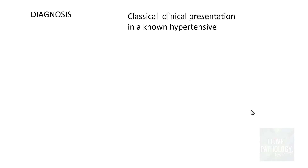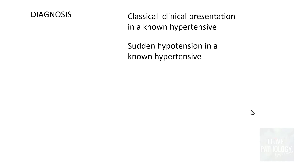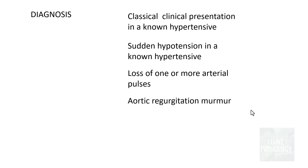How do you diagnose aortic dissection? In a patient with long-standing hypertension, the classical clinical presentation itself is diagnostic. Sudden hypotension in a known hypertensive, a difference in blood pressure between different limbs, loss of one or more arterial pulses, and an aortic regurgitation murmur are all diagnostic clues. Radiological diagnosis by ultrasound or CT scan confirms the diagnosis.